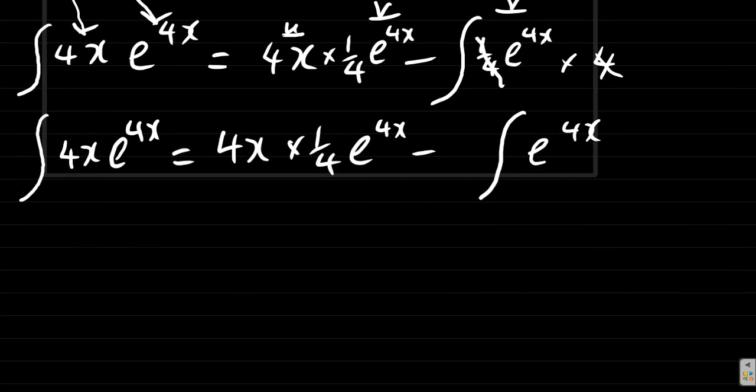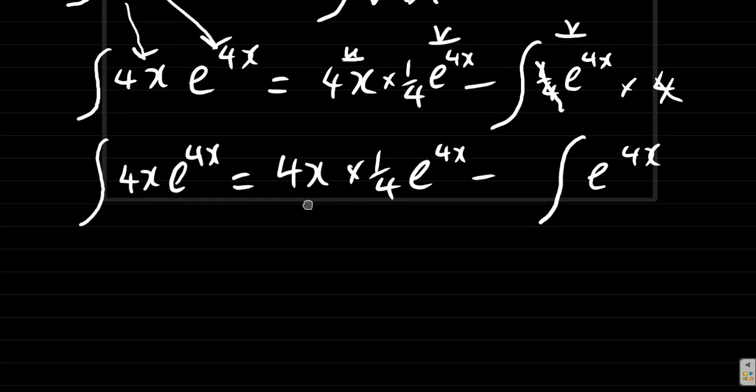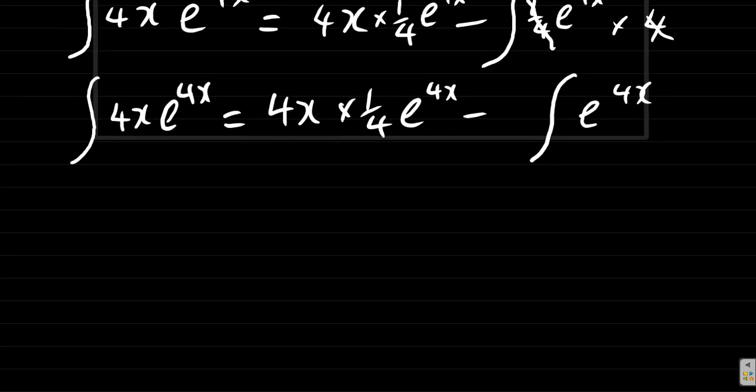Erase some of what we did before. All right, so it is equal to 4 times a quarter is 1, so it's x e to the 4x minus